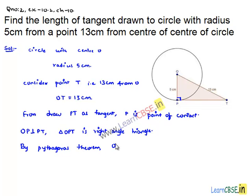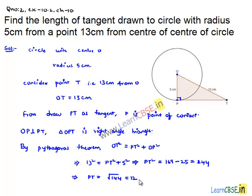By Pythagoras theorem, hypotenuse square that is OT² is equal to PT² plus OP². This implies 13² = PT² + 5², which implies PT² = 169 - 25 = 144. Now, we need only the value of PT which is equal to square root of 144 which is equal to 12 cm.